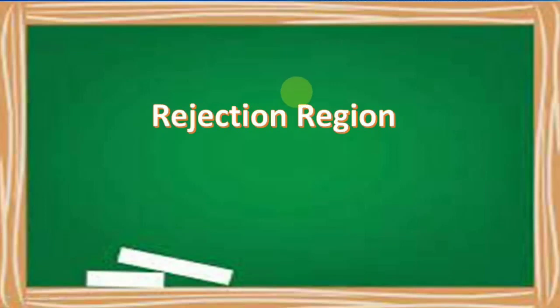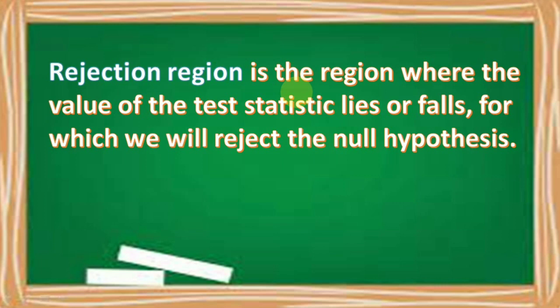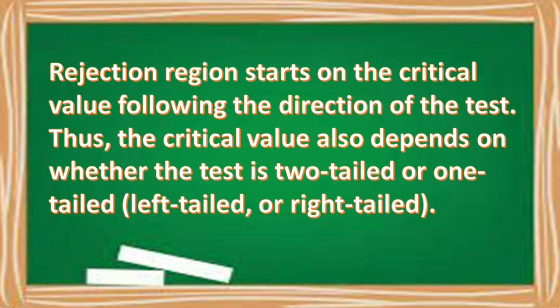We're going to discuss rejection region. Rejection region is the region where the value of the test statistic lies or falls for which we will reject the null hypothesis. Rejection region starts on the critical value following the direction of the test. Thus, the critical value also depends on whether the test is two-tailed or one-tailed.